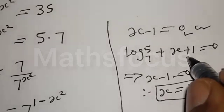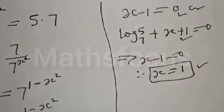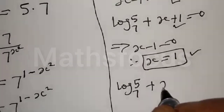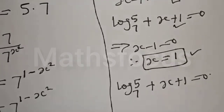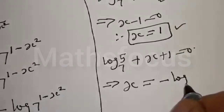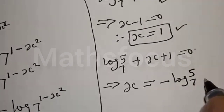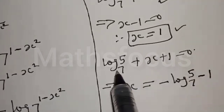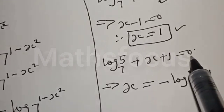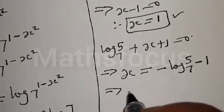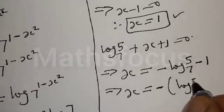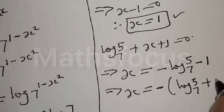Let's take a good look at the other equation. We have log base 7 of 5 plus x plus 1 equal to 0. Let's make x the subject of the formula. x is equal to minus log base 7 of 5 minus 1. If plus log base 7 of 5 crosses to the other side it becomes minus, and if this plus 1 crosses the other side it becomes minus 1.